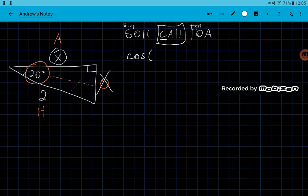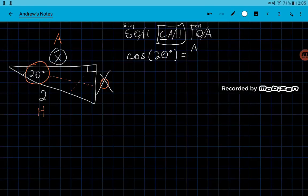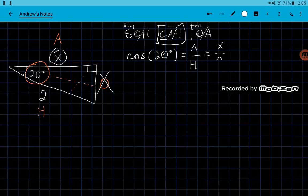So cosine of, and what has to go inside of a cosine is always the angle, so cosine of 20 degrees, and that has to be equal to the adjacent divided by the hypotenuse. That's what all of these rules are, so these are always this guy divided by that guy. So cosine of our angle equals the adjacent over the hypotenuse, which in this case is x divided by 2.